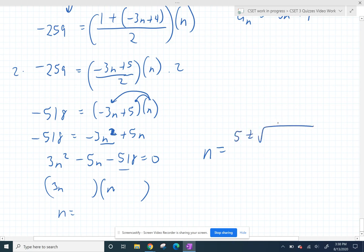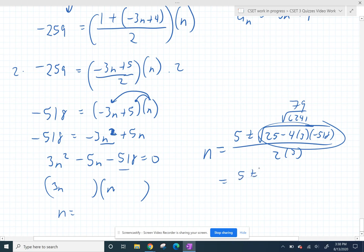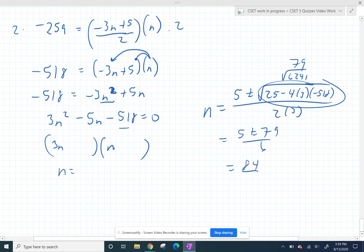So this ends up being the square root of 6241, which is 79. So I've got 5 plus or minus 79 all over 6. So that's 84 over 6 if you add 5 plus 79. And if you do 5 minus 79, you get negative 74 over 6. So you get 14 or negative 37 over 6.